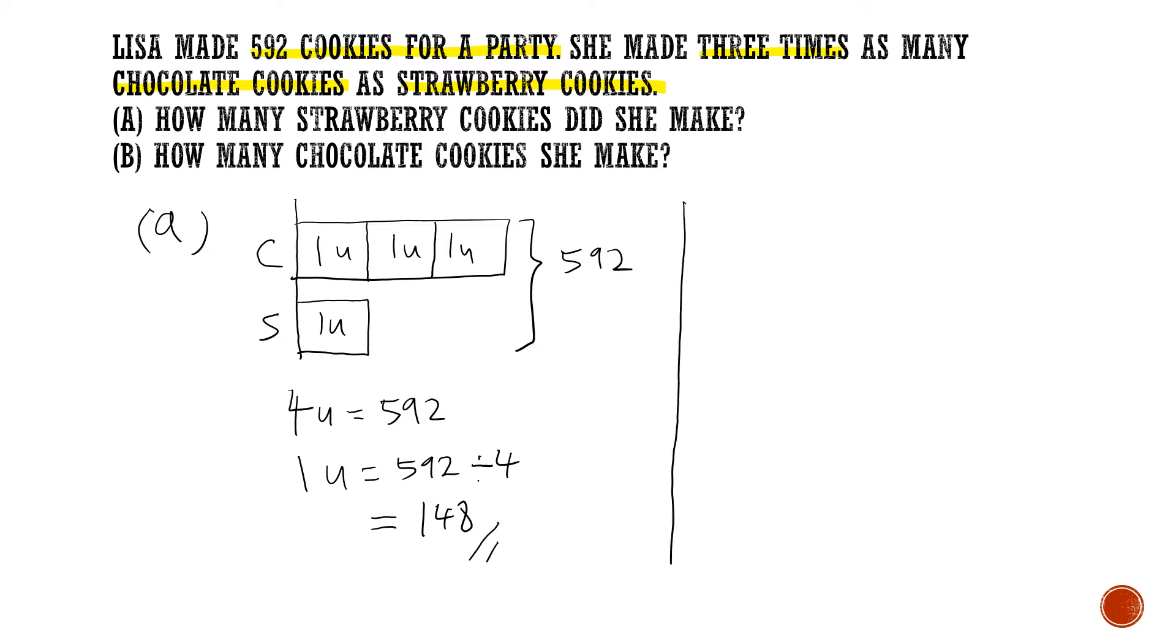Now for part B. Chocolate cookies is 3 units. So if 1 unit equals to 148, you have to write down all this. I insist on all these workings. Don't take the shortcut. So chocolate cookies is 3 units. It's actually 148 times 3, which is 444. Now is there a faster way to do this? The answer is yes. Another method you can do is to notice that actually the chocolate cookies is 592 minus 1 unit, which is equal to 592 minus 148. And you should still get the same answer.